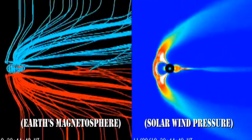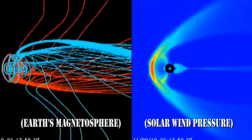You can also see how much the pressure changes on the magnetosphere, as the temperature, density and velocity of the solar wind change.